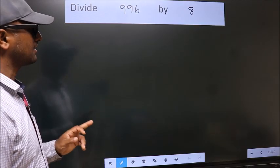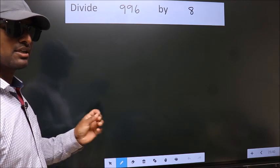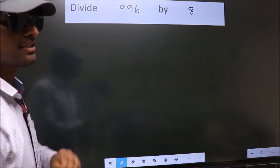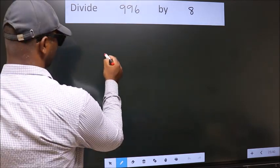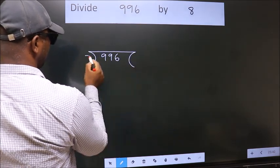Divide 996 by 8. To do this division, we should frame it in this way. 996 here, 8 here.